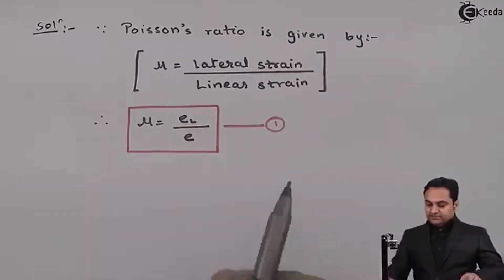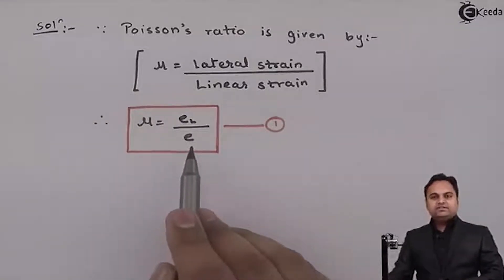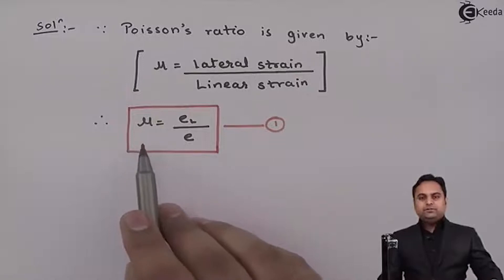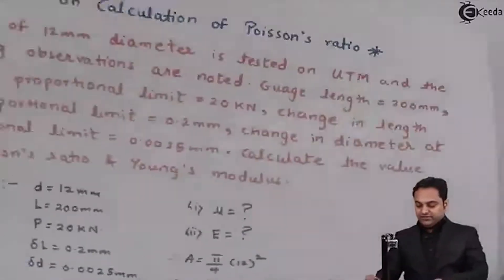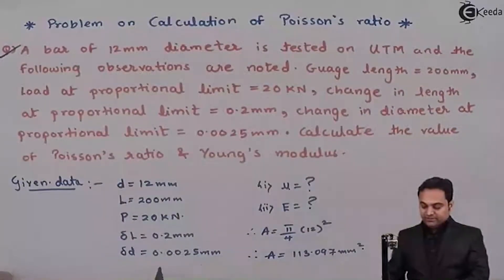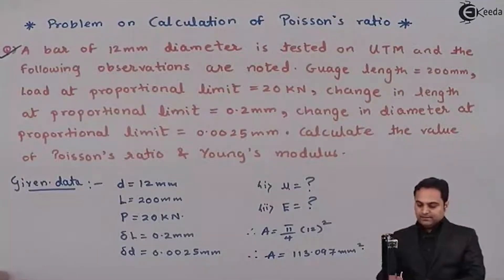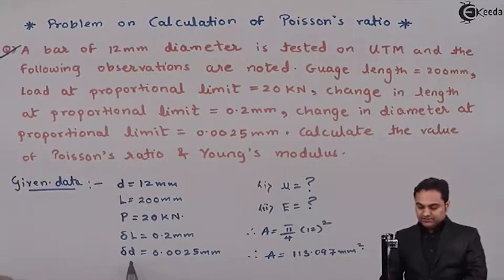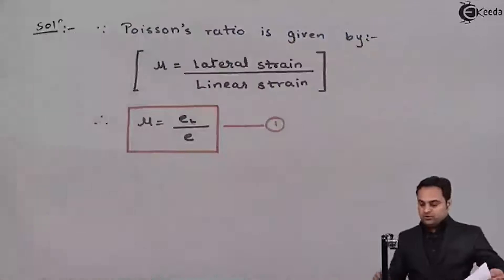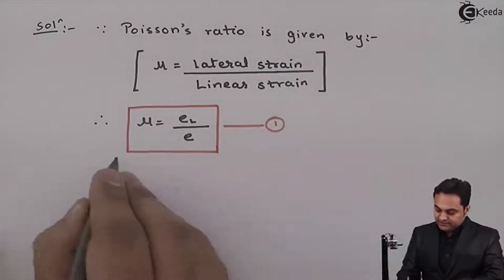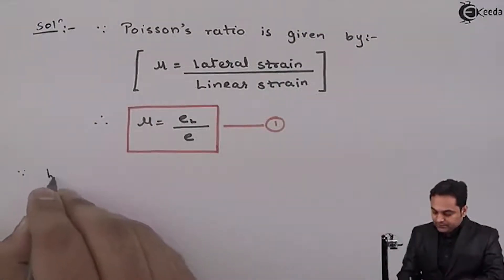Now since we have to find out lateral strain and linear strain so that we can calculate mu. For lateral strain, it will be change in the lateral dimension and that lateral dimension is delta d. So since lateral strain E suffix L is equal to change in diameter upon the original diameter.